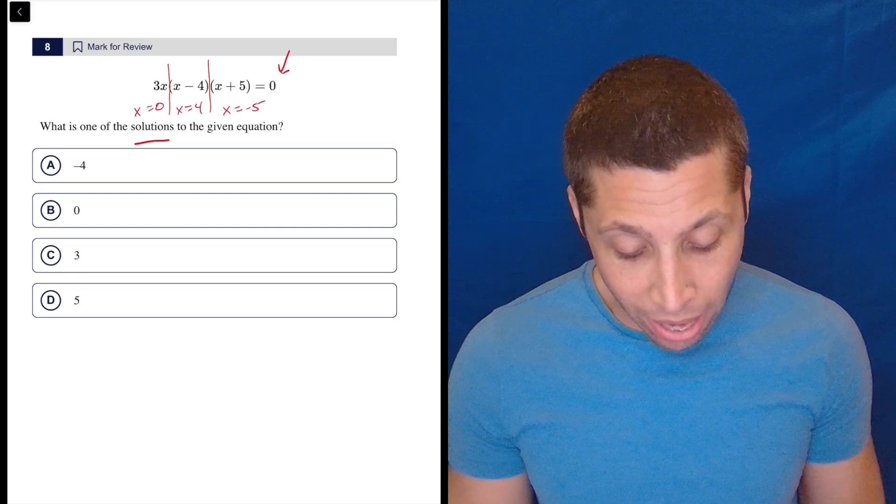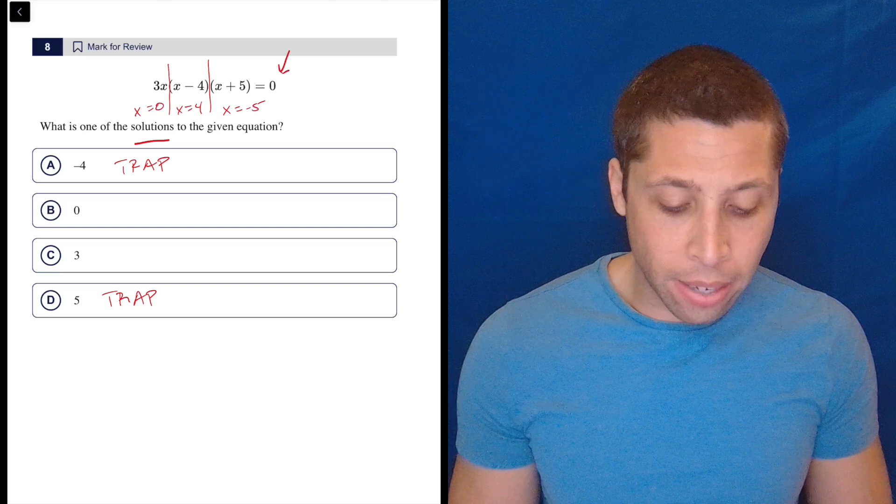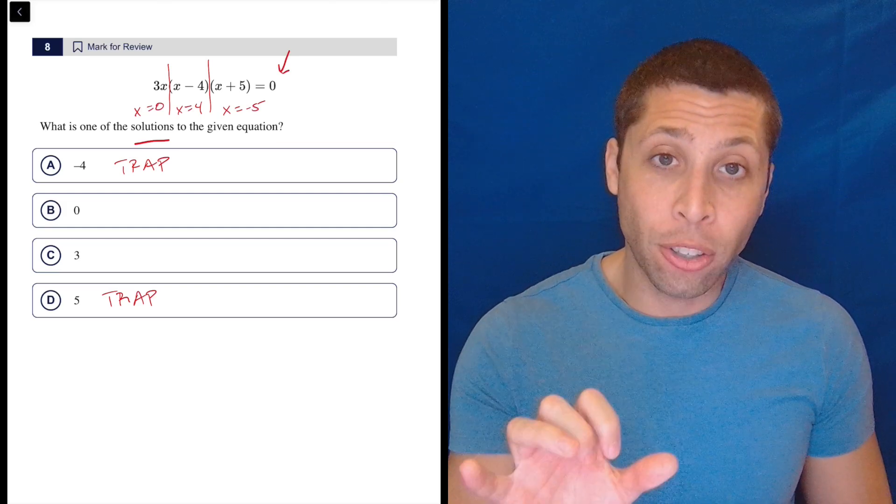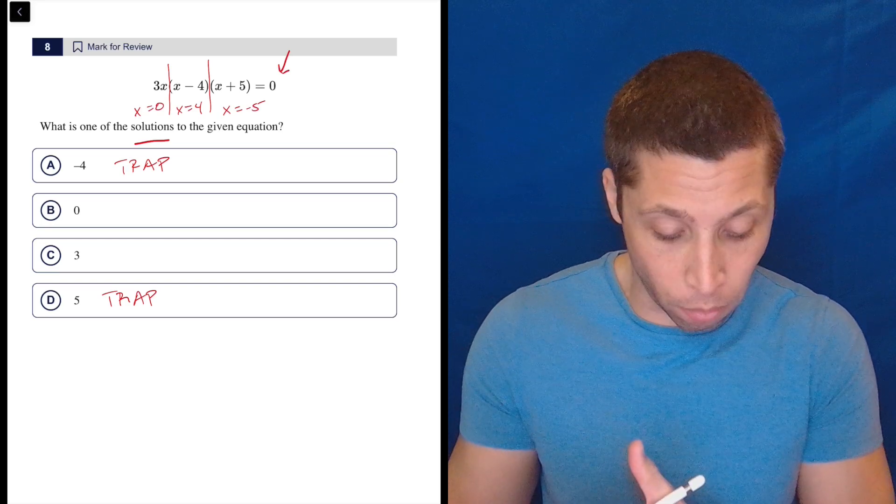So we see we have some traps because some of you are going to forget or just kind of ignore that the sign of the factor is the opposite of what the actual solution would be. And that's because we're trying to make a zero.